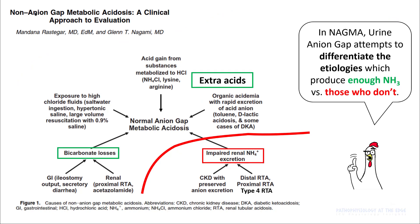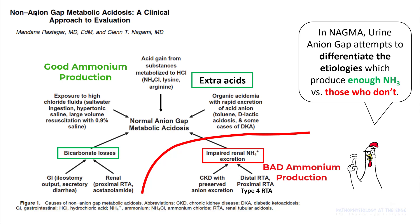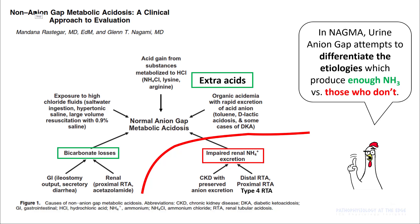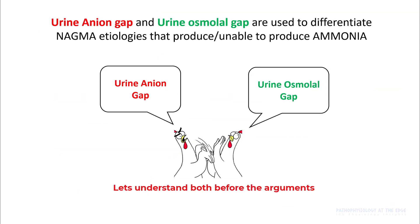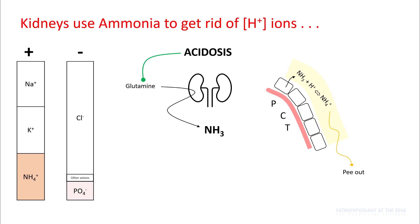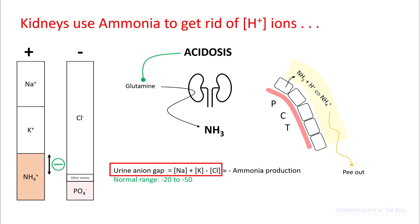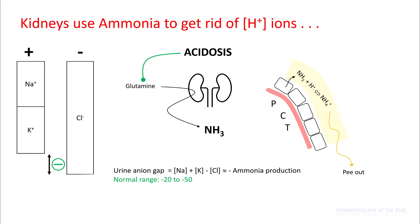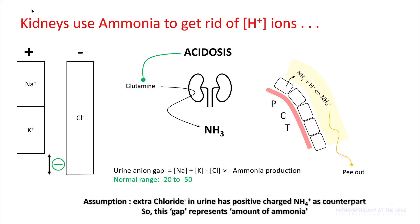Urine anion gap and urine osmolal gap both attempt to differentiate etiologies that produce enough ammonia versus those that don't. As you can see in the etiology diagram, renal causes result in impaired renal ammonia excretion. So using either method can help differentiate renal versus extra-renal causes of non-anion gap acidosis. The urine anion gap is the difference between the sum of sodium and potassium in the urine, minus chloride. This urine anion gap approximates ammonia production — it represents how much extra chloride you have compared to sodium and potassium, with the assumption that this extra chloride has an ammonium counterpart. So the urine anion gap indirectly represents the amount of ammonia.